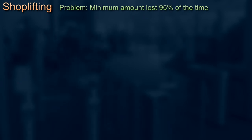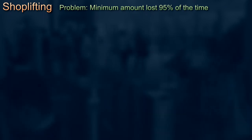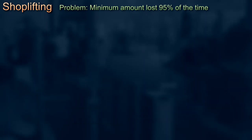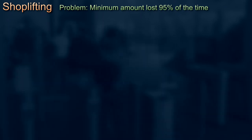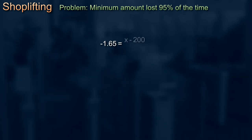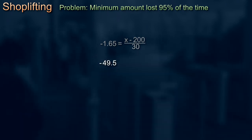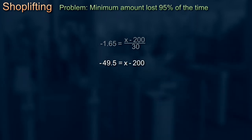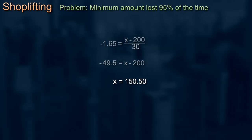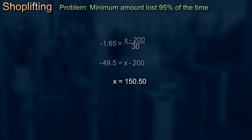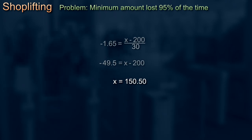In this last problem, we're interested in the left-hand tail of the normal distribution — the lowest 5%. Given that a lower tail value of minus 1.65 gives a tail area of 5%, we have: minus 1.65 equals x minus 200 over 30, so minus 49.5 equals x minus 200, therefore x equals 150.50. The store can expect to lose at least £150.50 on 95% of the days.